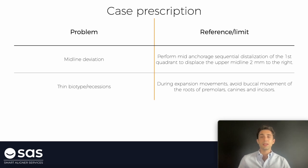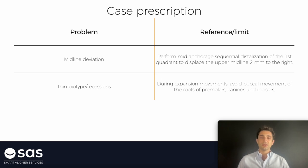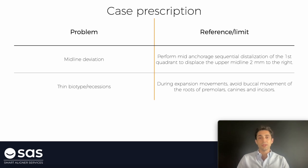Another example: when we have a patient with thin biotype or recessions and we don't want to do too much expansion because it's going to be very risky, in those cases I'm going to write: please avoid buccal movement of the roots of premolars, canines and incisors. On molars, to do some buccal root movements is not going to be very dangerous — it's very rare to create a recession on a molar. But on premolars, canines and incisors it's easier to create those problems. So if I can control this on the virtual planning, it's going to be better for the patient.